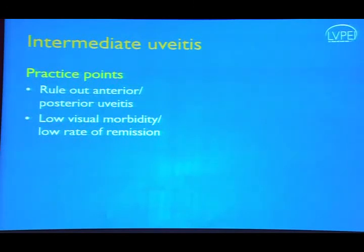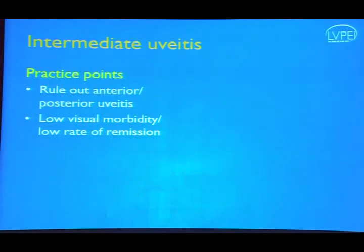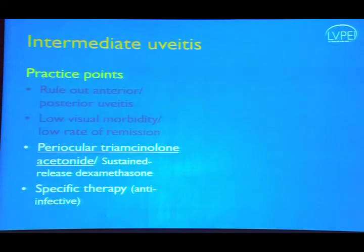For intermediate uveitis, two key take-homes: first, rule out anterior uveitis with spillover vitritis or a posterior uveitis where the chorioretinal lesion is not clearly visible — intermediate uveitis is probably the most over-diagnosed condition because the primary location of inflammation is missed. Second, visual morbidity is relatively low compared to posterior or anterior uveitis, but the rate of remission is also low, so inflammation tends to persist for a long time. Periocular corticosteroids are the mainstay; sustained-release dexamethasone is now also available. When a specific etiology is identified, think of specific anti-infective therapy.